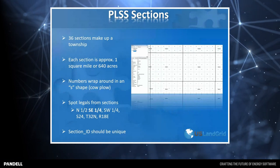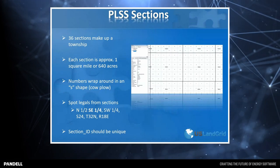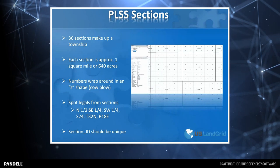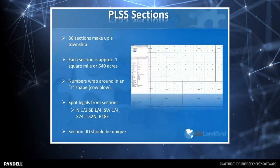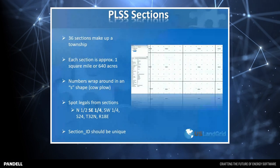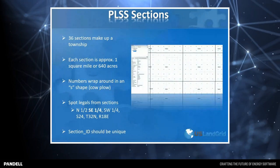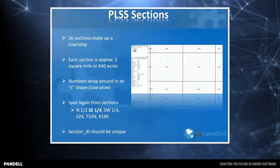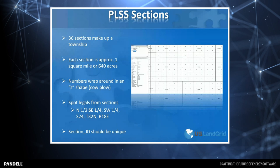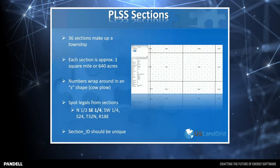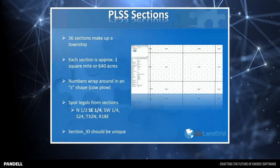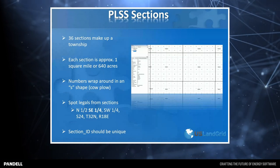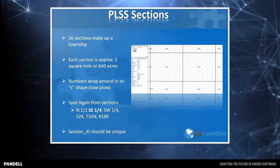Sections within a township generally wrap around in an S-shape or a cow-plow pattern. Section number one will be in the top right-hand corner, going from right to left to section six, then down to section seven, left to right all the way to section 12, and so on. In our land grid, you'll find that the section ID is unique — you won't find two section IDs anywhere in the country that are duplicates. The same principles apply when combining sections with townships and counties — they should obviously be unique.